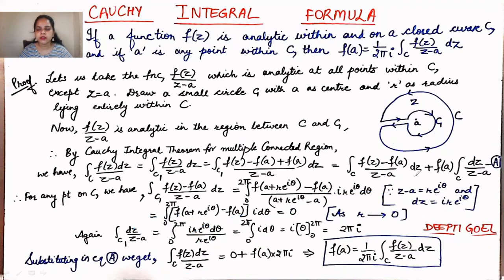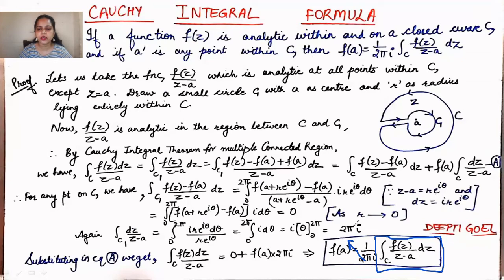In this way we can calculate the value of f(a) at the singularity. For numerical problems, the integral equals 2πi · f(a). You just need to identify whether the pole point is lying inside or outside the closed curve. If it is lying outside, directly apply the Cauchy Integral Theorem so the value is 0. If it is lying inside, apply the Cauchy Integral Formula: the integral equals 2πi · f(a), where f(z) is the numerator with the pole factor removed.